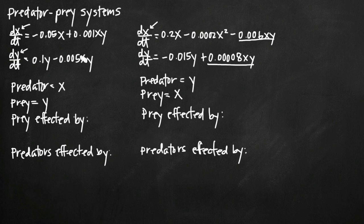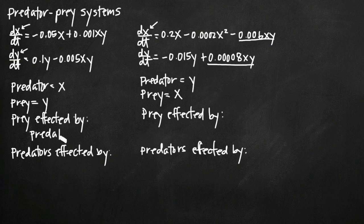We're also asked to determine whether the prey population is affected only by the predators or by some other food source. The first system on the left is the standard form for a predator-prey system. When we only have a first-degree term and an interaction term in each equation, we know that neither prey nor predators are affected by any other food source. Predator and prey are only affected by one another.